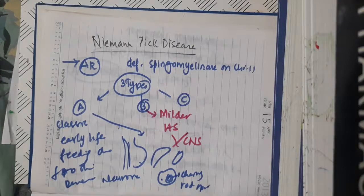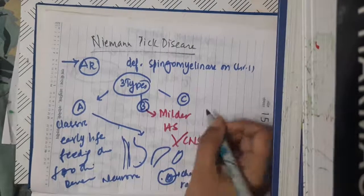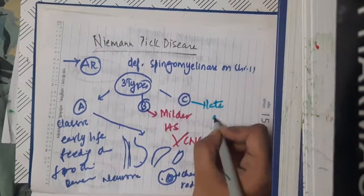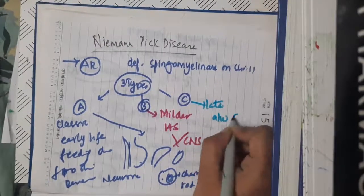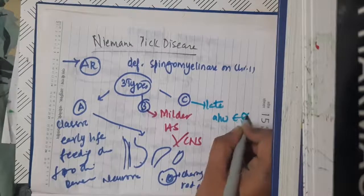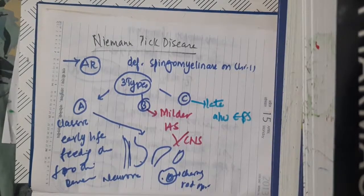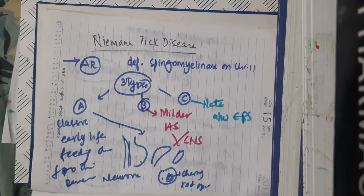Type C is late onset and is associated mainly with extrapyramidal symptoms. This is about Niemann-Pick disease.